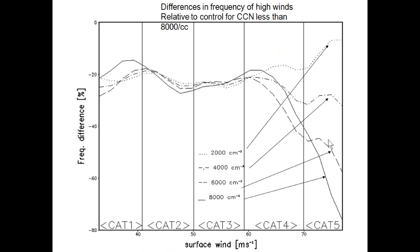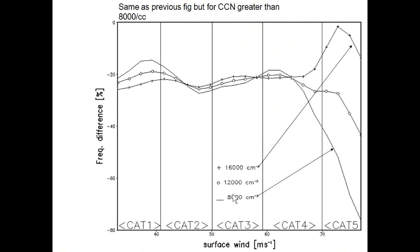Secondly, we can see a monotonic response that we didn't see in other simulations — going from an appreciable decrease in the intensity of category 5 winds, a similar but weaker response in category 4, and no response in the lighter wind situations.